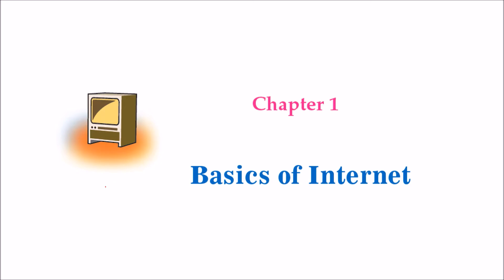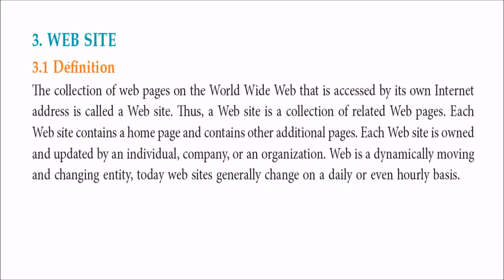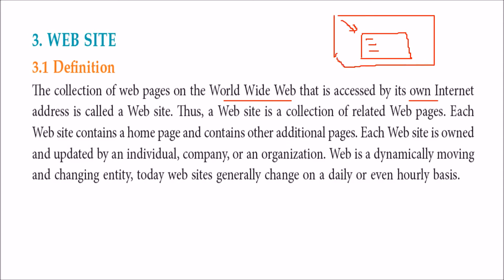We are discussing Chapter 1, Basics of Internet. What is a website? A website is simply a folder — a folder which contains web pages in HTML and various web technologies. It is a collection of web pages on the World Wide Web, accessed by its own internet address. This folder is kept inside a web server, has an IP address, and you can access it by the address of the website.